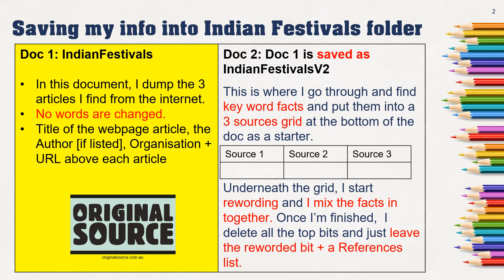I put those facts into a three sources grid that I make at the bottom of the document. It's a three sources grid, and I've put keyword facts into the three columns. I don't repeat them — if there are the same facts, they just go in column one, and it's extra facts that go into the next two columns. So now I've got my three sources grid.